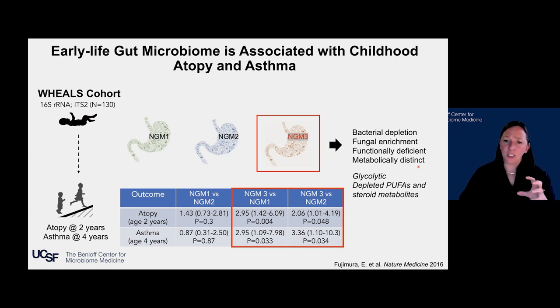What this suggested to us is that these high-risk one-month-old infants have a potently inflammatory microbiome that is really lacking the capacity to down-regulate inflammation once it starts. But we wanted to test this.